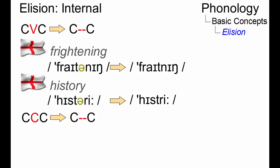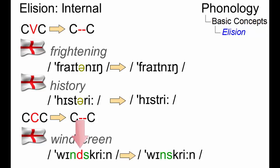Consonantal word internal elision follows the central principle where the middle consonant of three adjacent consonants is dropped, as in windscreen.